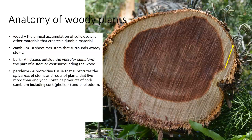Then we have what we call the periderm. Periderm is a protective tissue that substitutes the epidermis of the stem and roots of plants that live more than one year. It contains products of cork cambium, which include cork and phelloderm. This is the outer part of the bark that builds up over time, and in some plants it is sloughed off.